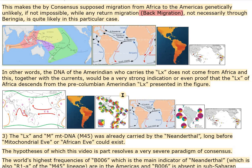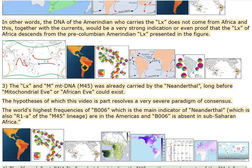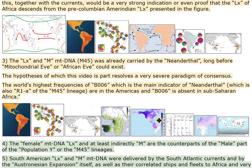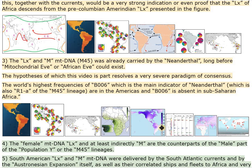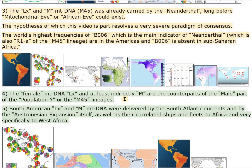The LX and M mtDNA, M45, was already carried by the Neanderthal, long before Mitochondrial Eve or African Eve could exist. The hypotheses of which this video is part resolves a very severe paradigm of consensus. The world's highest frequencies of B006 — which is the main indicator of Neanderthal, and is also R1A of the M45 lineage — are in the Americas, and B006 is absent in Sub-Saharan Africa.